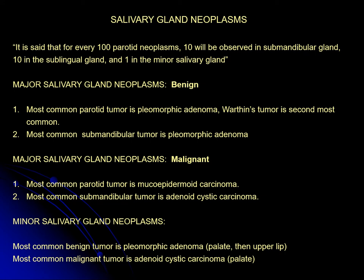For neoplasms, the most common benign parotid tumor is pleomorphic adenoma; Warthin's tumor is the second most common. The most common benign submandibular tumor is also pleomorphic adenoma. The most common malignant major salivary gland neoplasm is mucoepidermoid carcinoma, followed by adenocystic carcinoma. For minor salivary glands, the most common malignant tumor is adenocystic carcinoma, most often seen on the palate.